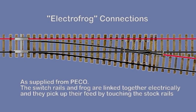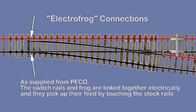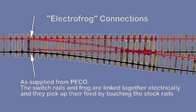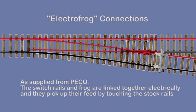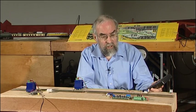From the diagrams you can see that with this type of point, it relies on the switch rails contacting the stock rails for changing the polarity of the crossing V or frog. You can get continuous pickup because the frog has power, but you can cause shorts at the point where the stock rail and the switch rail are close together at point X, especially if your clearances are tight or your wheels are too wide.